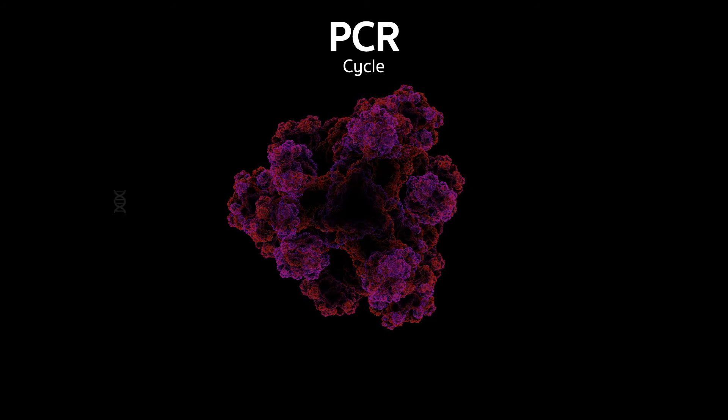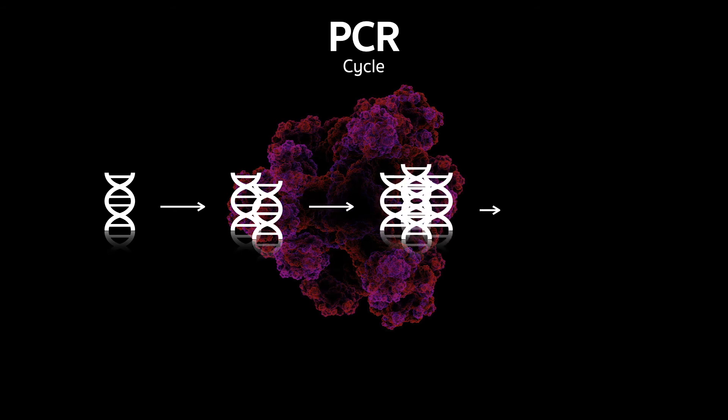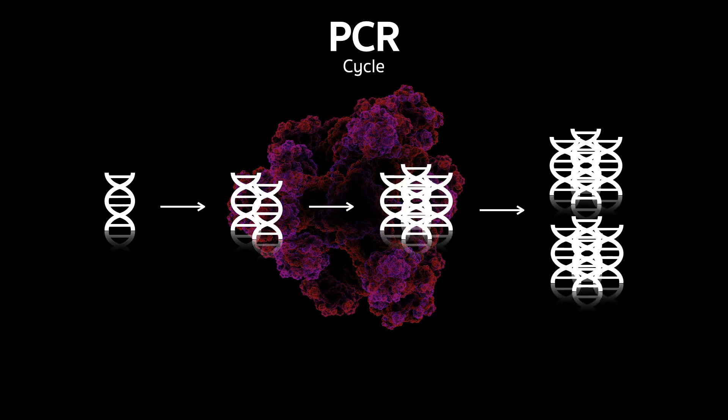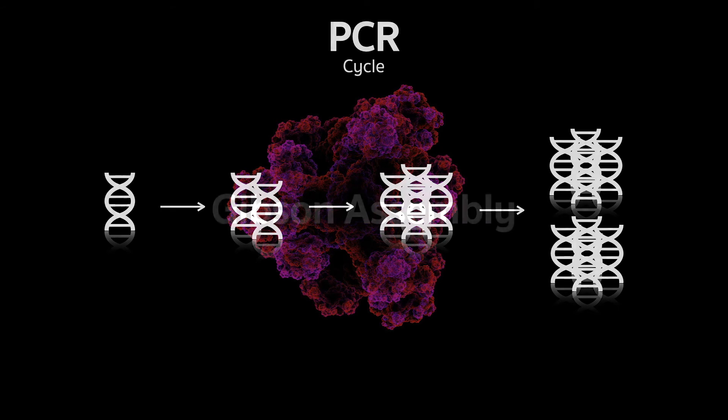So one cycle can generate two copies. The next can generate four. And the next can generate eight, and so on. So this technique is really powerful. With just a small amount of DNA left on the crime scene, it could be amplified and analyzed very easily.